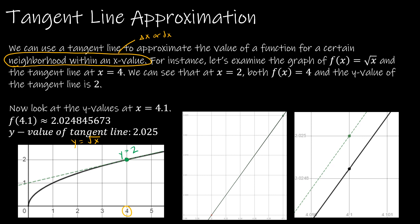What if we looked at y values at 4.1? Remember when we said a neighborhood within an x value? Essentially we're saying that delta x or dx is equal to 0.1. In that little neighborhood, our values for y or f of x and the value for the tangent line are going to be approximately equal. Here is a graph showing that this is x equals 4 and this is x equals 4.1, and you can see that the green point and the black point look almost the same, even when zoomed in.